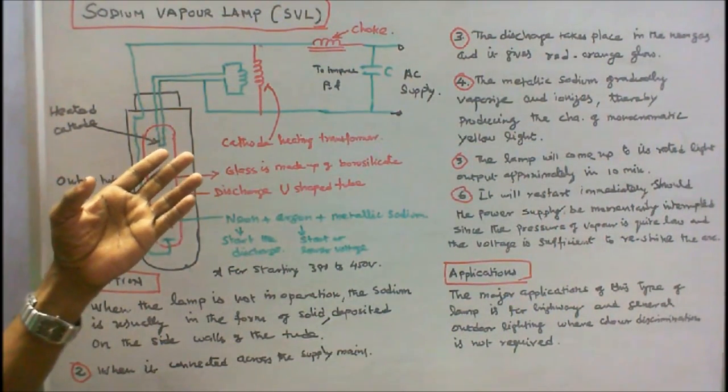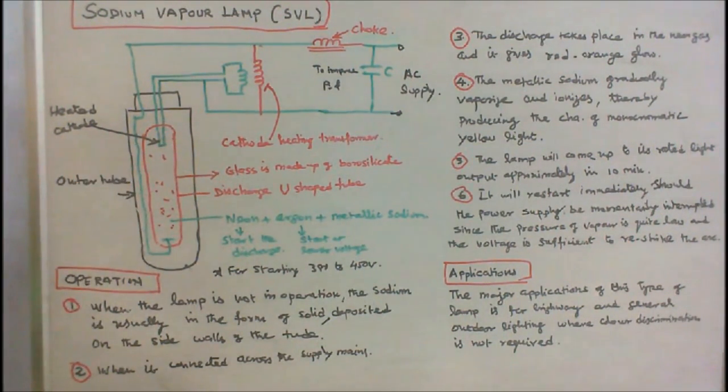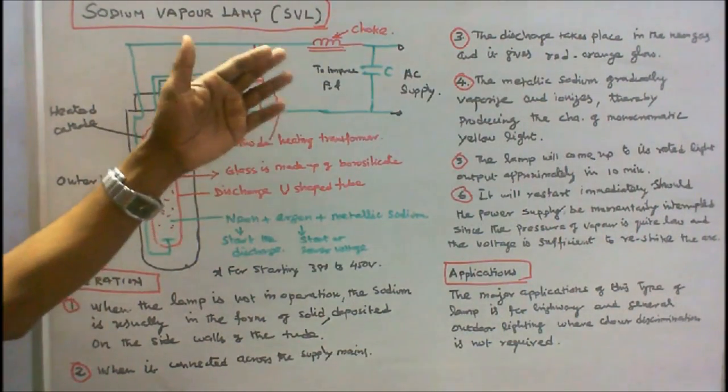The operating power factor of a sodium vapor lamp is 0.3. To improve the power factor, a capacitor is connected across the supply.